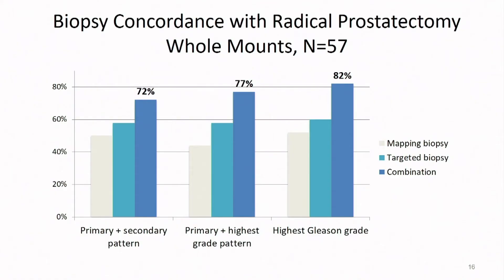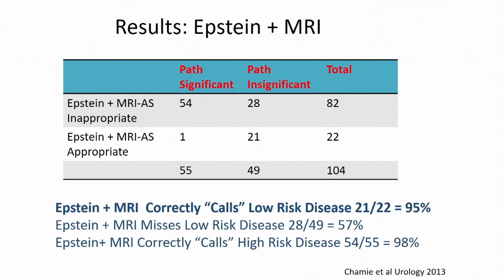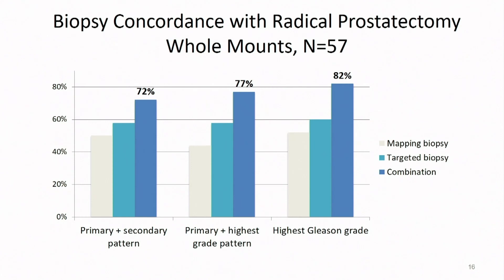We looked at the concordance rate between targeted biopsy or combined systematic plus targeted biopsy and the final radical prostatectomy specimen. With standard transrectal ultrasound biopsy, cancers are undergraded about 30-40% of the time. Using a targeted biopsy approach, undergrading drops to about 18-20%. But the best results, at least in our hands, were a combination of systematic and targeted biopsy to yield the optimal concordance score.